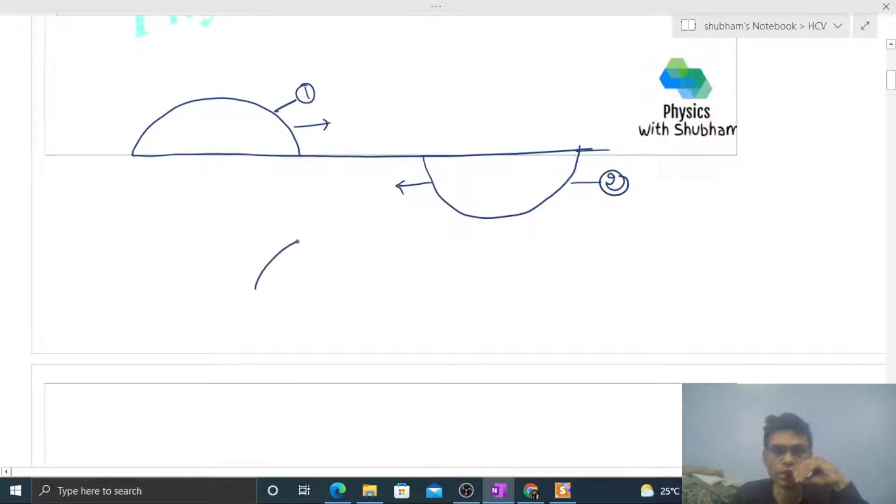And they are moving towards each other. What will happen jab yeh overlap karenge? Kuch time ke baad jo wave 1 hai wo kuch aage jayega and wave 2 jo hai wo kuch peeche jayega, something like this.